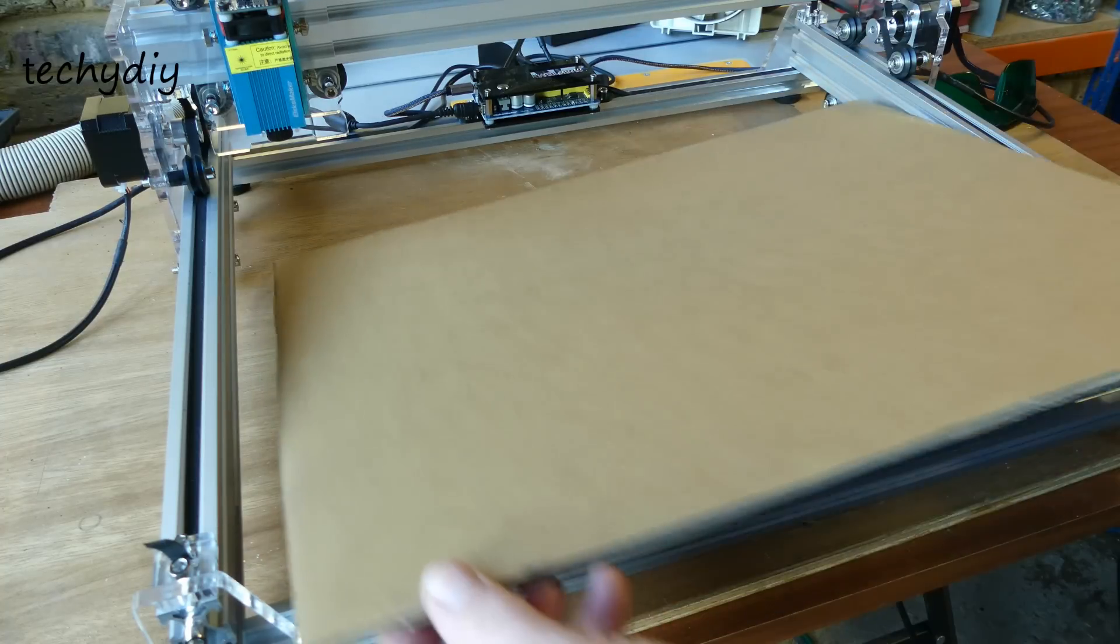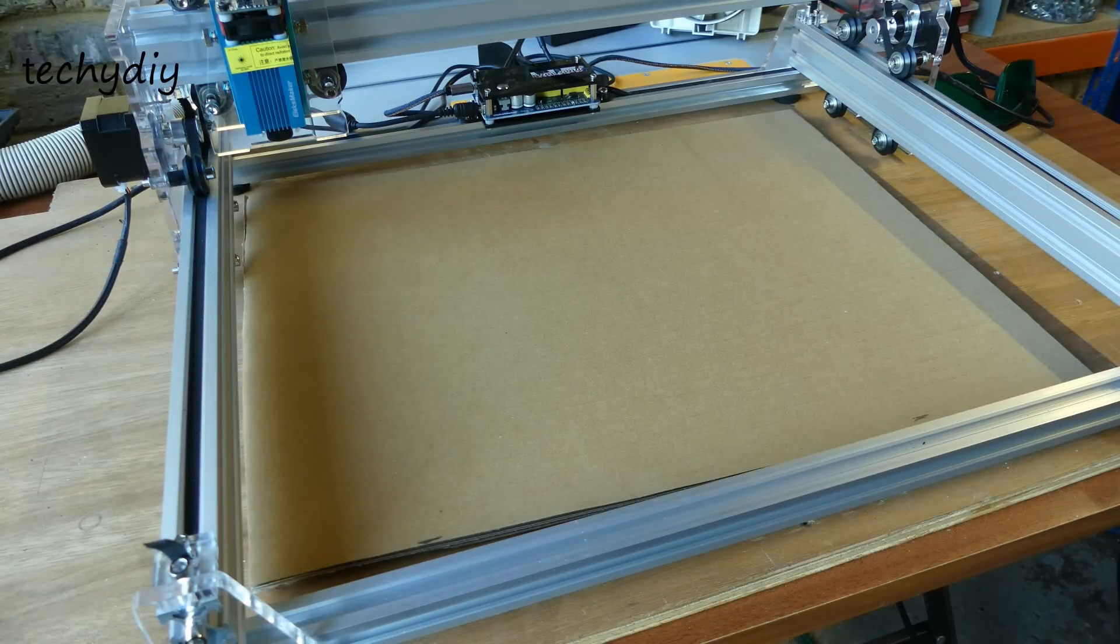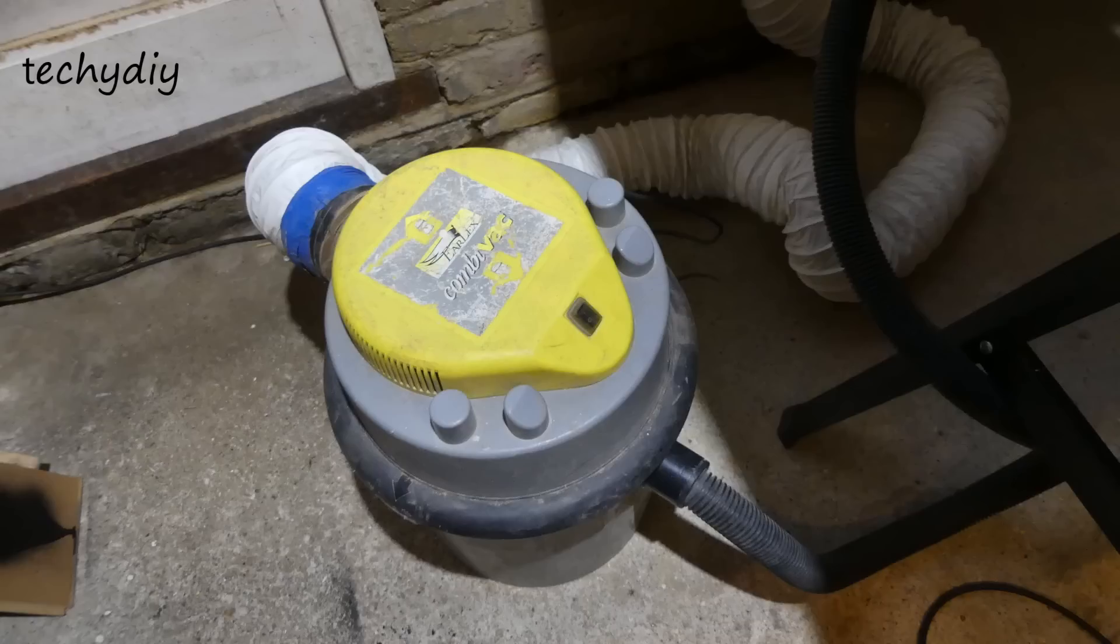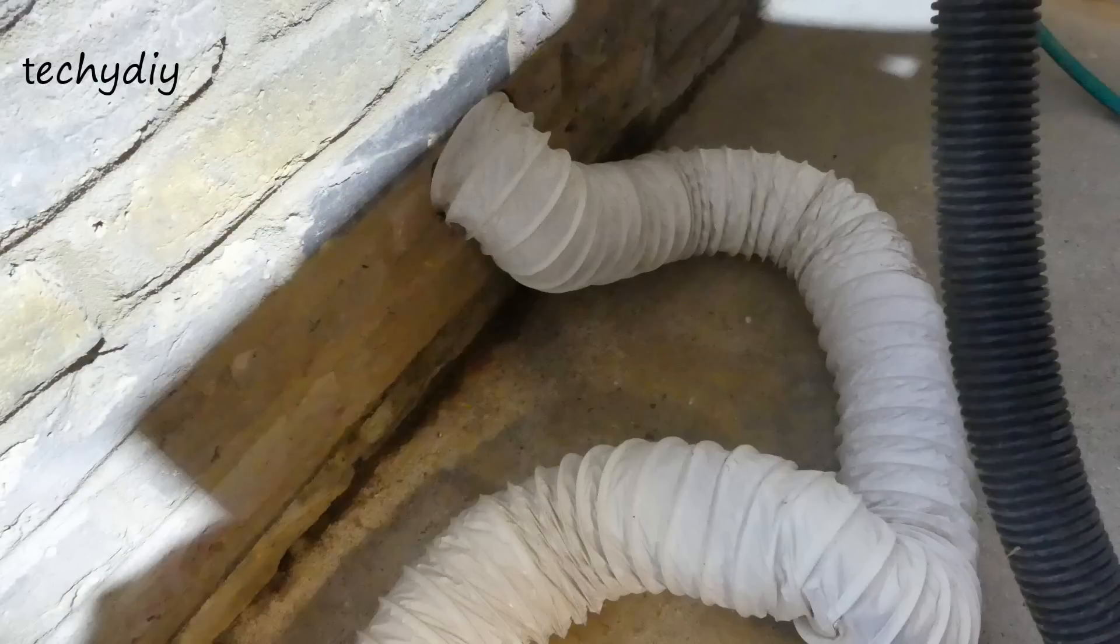Before going much further, it's a good idea to put something down underneath the laser so that we don't burn the tabletop. And the laser generates smoke and fumes, so some sort of extraction is essential. For the moment I'm just using a shop vac that is vented externally, but ultimately I'm going to build a ventilated cabinet.